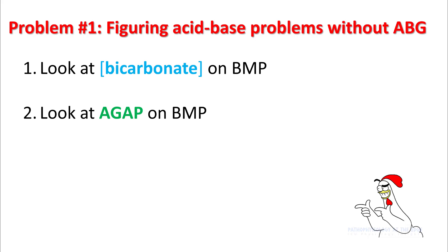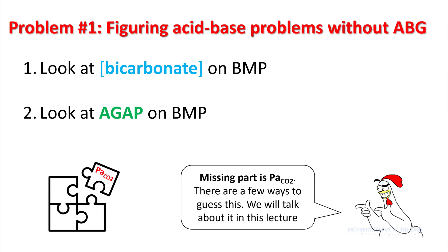There are two steps in doing that. First, look at the bicarb, and then next, look at the anion gap. The missing part is the PaCO2, and there are a few ways that we can figure this out, which we'll talk about later in the lecture.